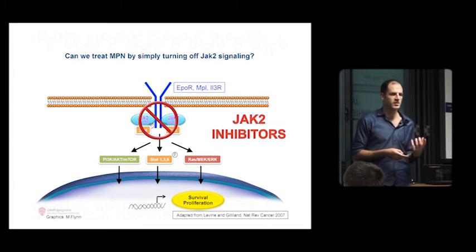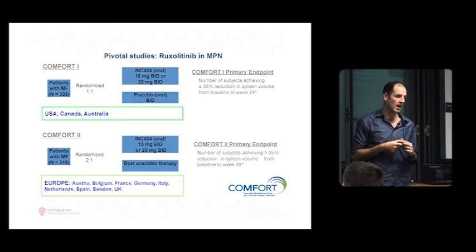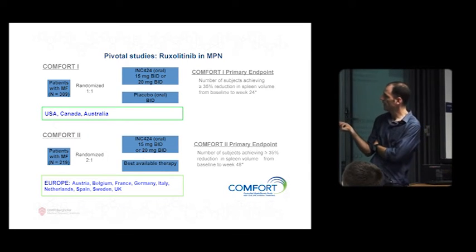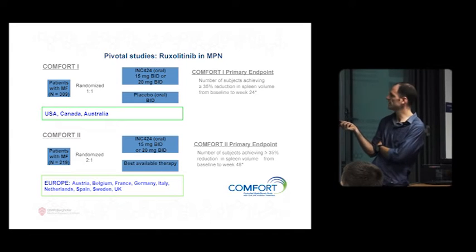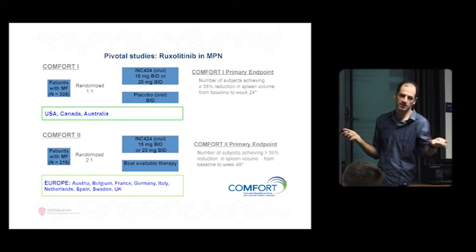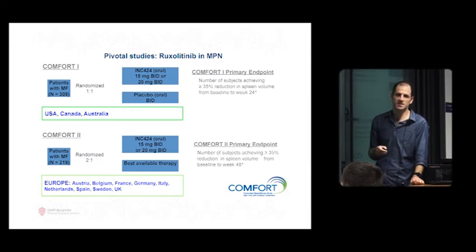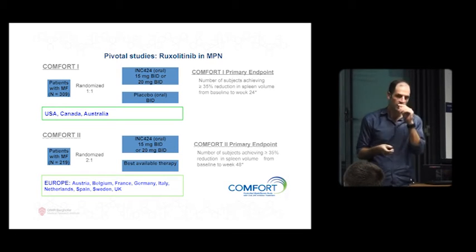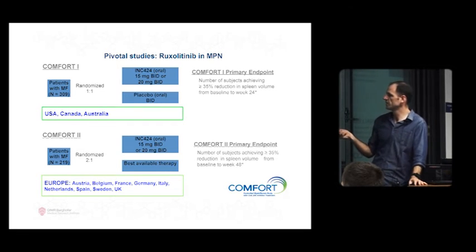They started a number of studies, but the big two studies were called the COMFORT studies, and these were used in myelofibrosis. The drug INC-424, now known as JAKAVI or Ruxolitinib, was initially marketed by Incyte and then bought by Novartis. They took patients with myelofibrosis and said you can either have Ruxolitinib or JAKAVI or placebo - nothing, a tablet that looks the same but doesn't do anything. COMFORT 2 was basically the same design, only they offered patients either the active drug or best available therapy, which means hydroxyurea and whatever else we want to use to control the disease.